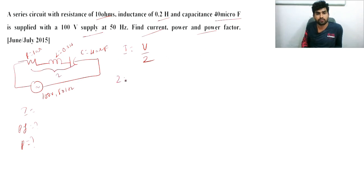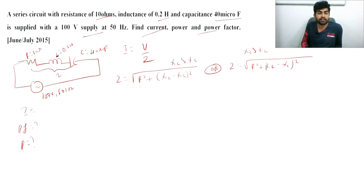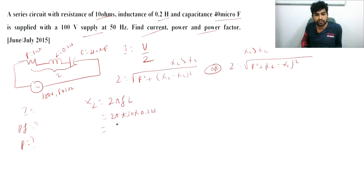Z is equal to the square root of R squared plus (XL minus XC) squared if XL is greater than XC, or root of R squared plus (XC minus XL) squared if XC is greater than XL. We need to find XL and XC first, since we can't directly use L and C. XL equals 2πfL = 2π × 50 × 0.2 = 62.83 ohm.